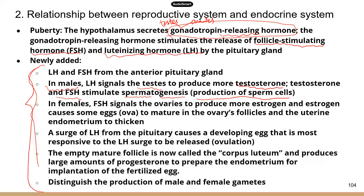In females, follicle-stimulating hormone signals the ovaries to make more estrogen. Estrogen can cause some eggs to mature in the follicles, which are present in ovaries — so these eggs develop and mature in follicles. A surge of luteinizing hormone will cause these developing eggs to be released, and that process is basically ovulation, which happens once a month. Once the follicle is empty because the egg has been released, that empty follicle is now called the corpus luteum.